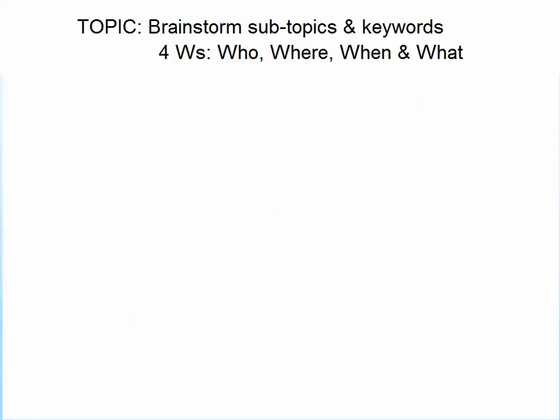One easy way to think about this brainstorming process is to ask yourself what we call the four W's about your topic: Who is involved? Where geographically are you focusing on? When in time are you looking at this topic? And what sort of disciplinary lens are you looking at this topic through?